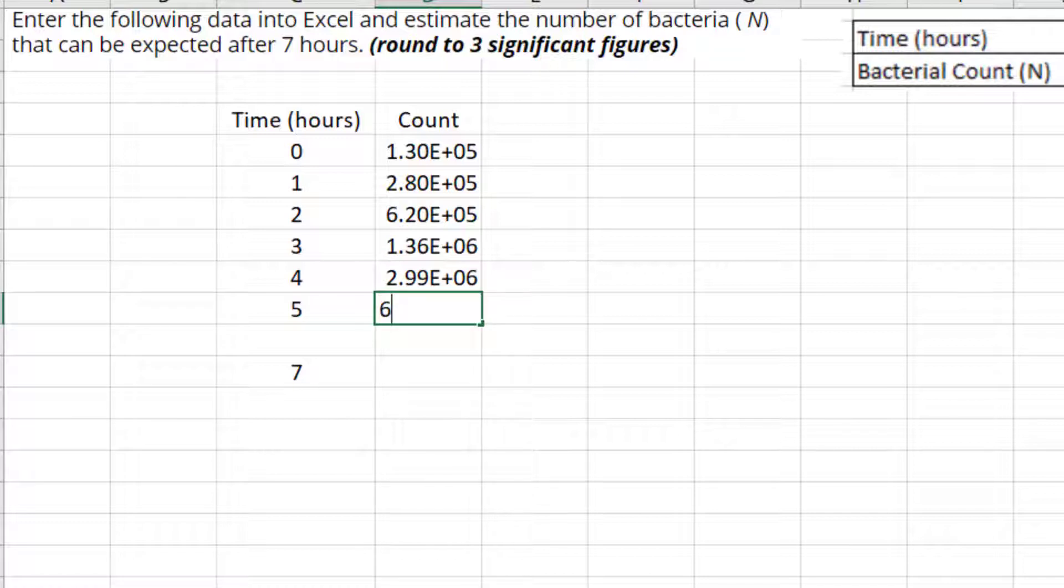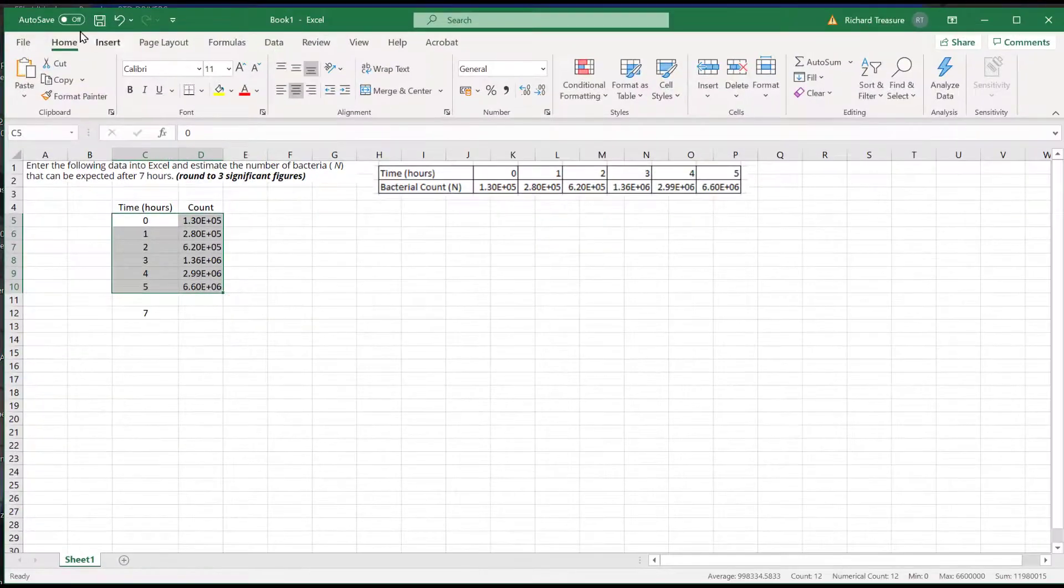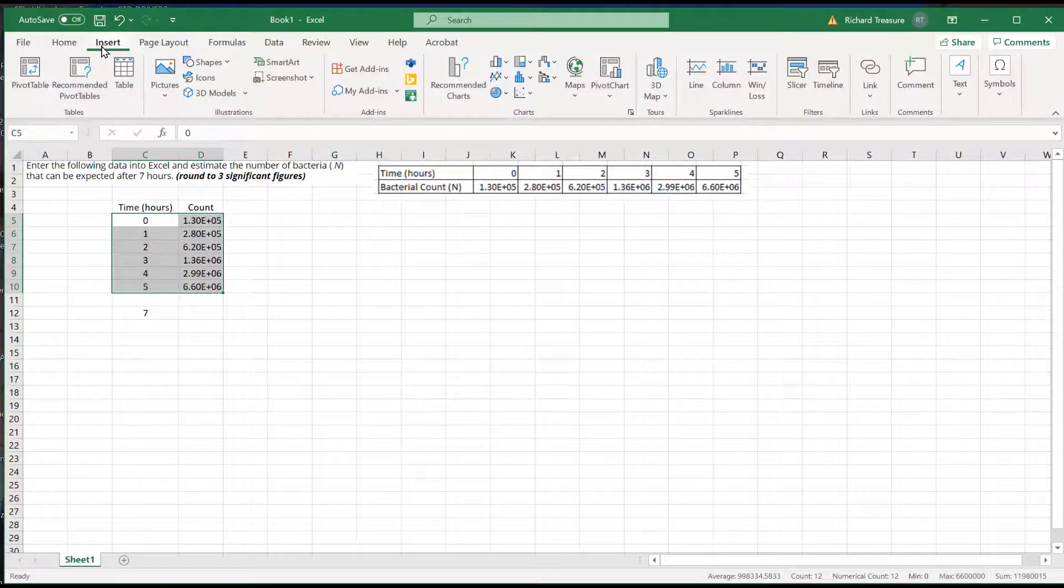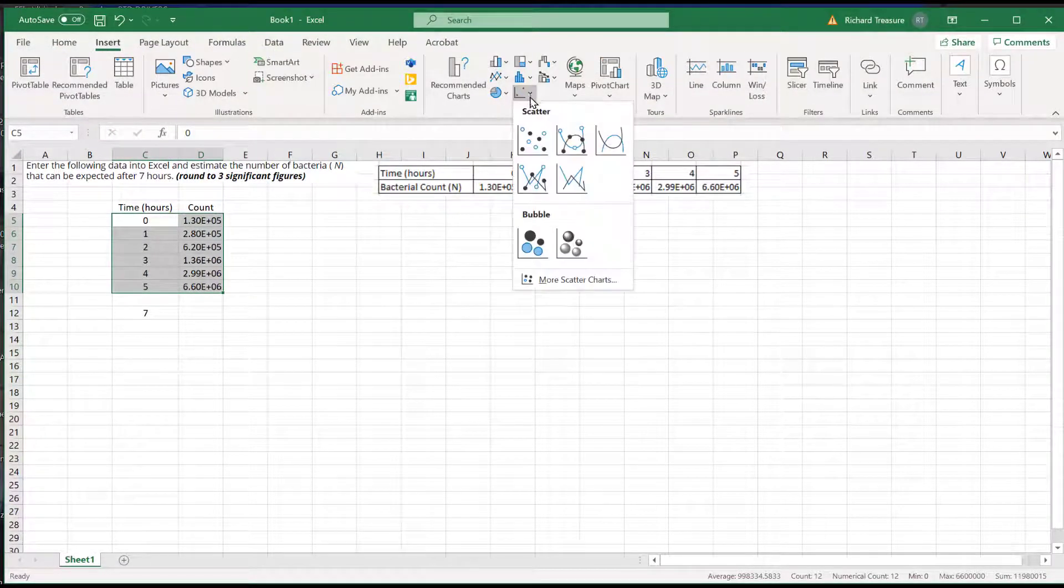Once all the data is entered, I'm going to employ an XY scatter plot and display the equation of the exponential trendline. So I block all the numbers, then select XY scatter markers only.